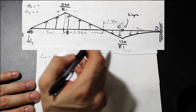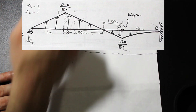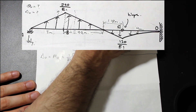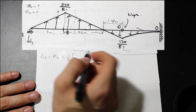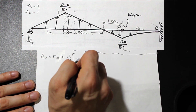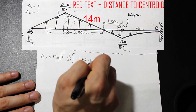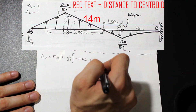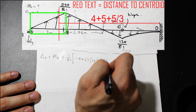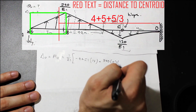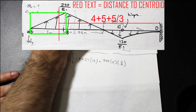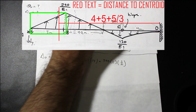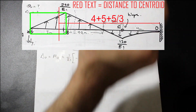Factoring out 1/EI, our sign convention is: downward forces are negative, upward are positive. Ay is negative 925.1 times 14 — that's the distance from A to D (5 + 5 + 4). The next triangle gives positive 390 times 5 times one-half, multiplied by the distance to its centroid.